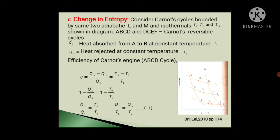So, take the first cycle. Here A to B is isothermal expansion, B to C is adiabatic expansion, C to D is isothermal compression, and D to A is adiabatic compression.